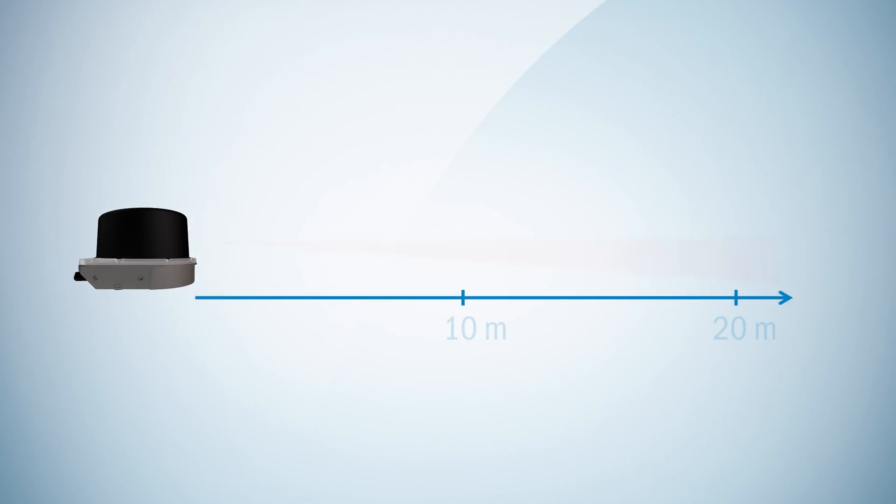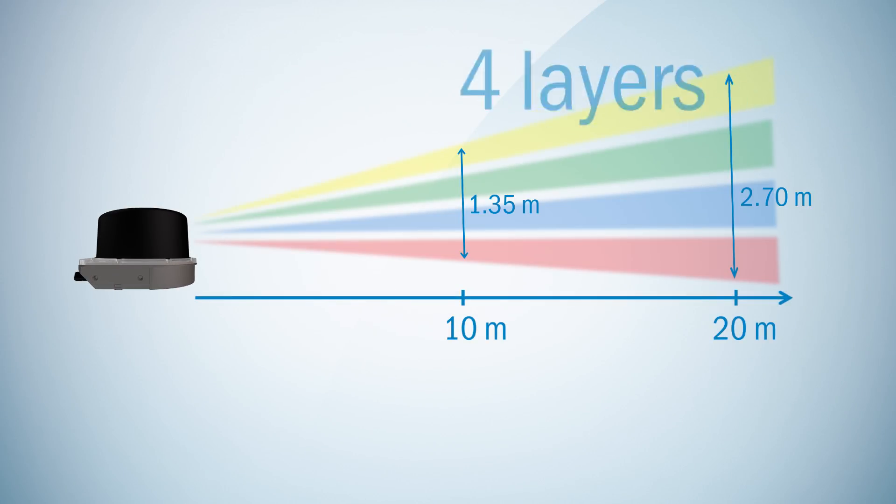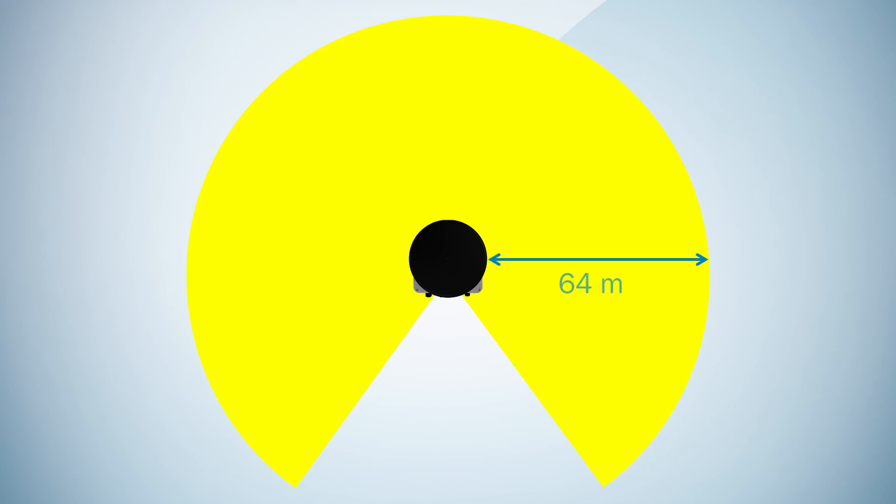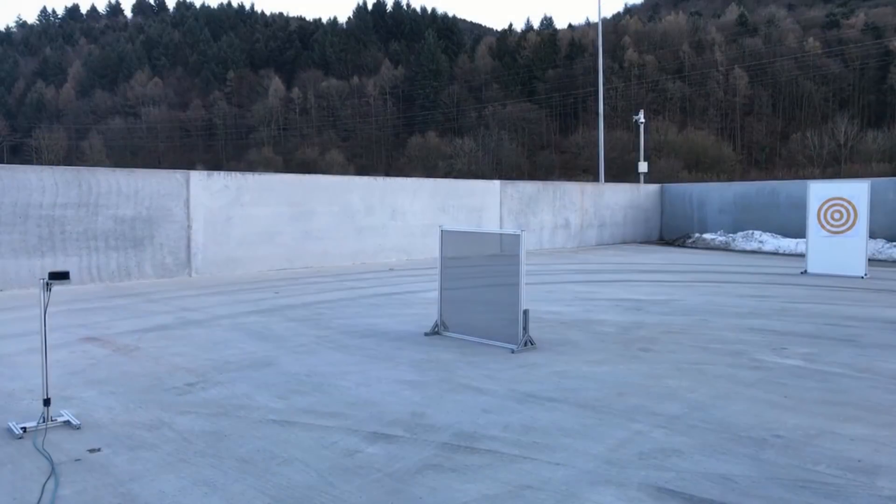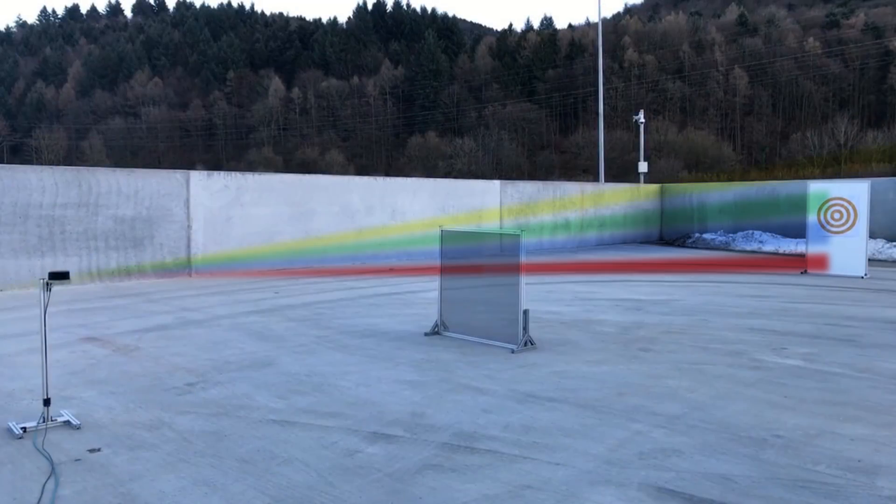The MRS1000 uses multi-layer technology. The sensor uses four layers which enables it to scan the environment in multiple dimensions up to a distance of 64 meters. More data on several planes in a three-dimensional space results in high coverage and greater reliability. These layers are spread out across a vertical opening angle of 7.5 degrees.